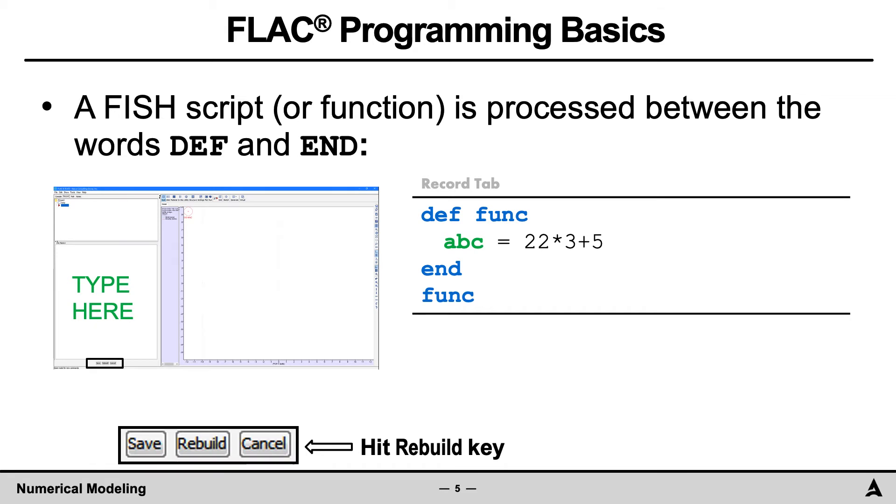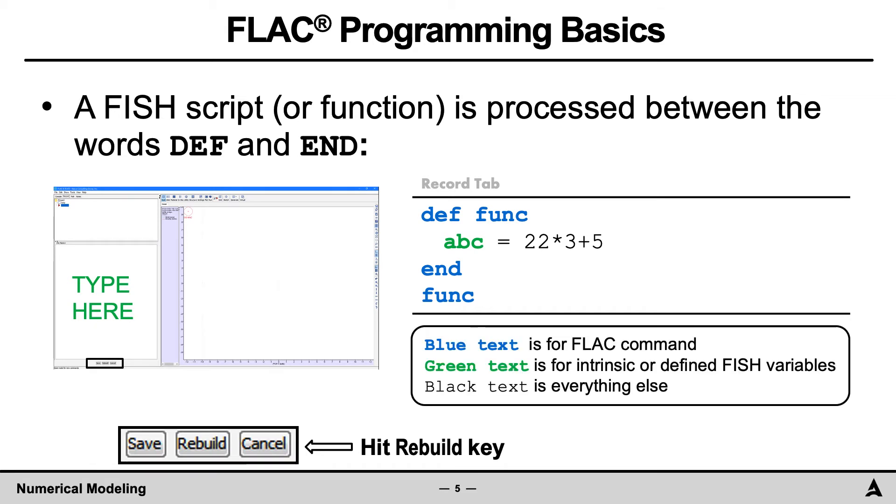Note that in this presentation, the blue text represents FLAC commands, the green text represents intrinsic or defined FISH variables, and the black text represents everything else.